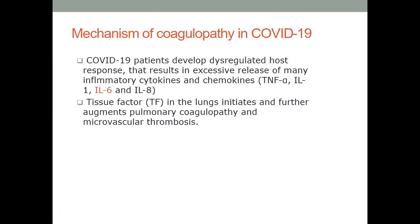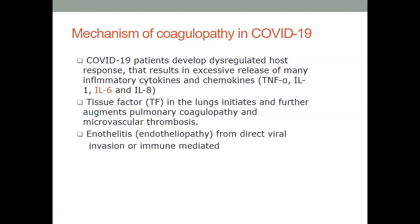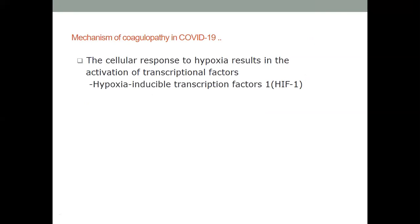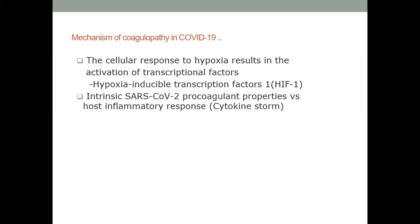Once there is elaboration of tissue factor from monocytes and endothelial cells, coagulation is definitively triggered. There is also endothelitis or endotheliopathy — a robust inflammation of the endothelium — which serves as an attractive site for cellular and non-cellular coagulation factors. The host's immense inflammatory response is accompanied by elaboration of transcriptional factors like hypoxia-inducible transcription factors, further promoting thrombin generation and vascular activation.